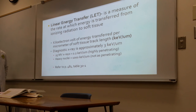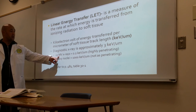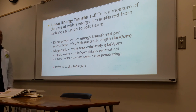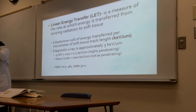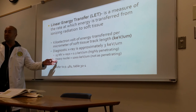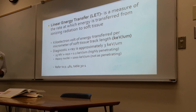The first physical factor for determining absorbed dose is linear energy transfer, or LET. LET is a measure of the rate at which energy is transferred from ionizing radiation to soft tissue, described in keV per micrometer of soft tissue tract length. Diagnostic x-rays have an LET of approximately 3 keV per micrometer. High-energy 25-megavolt x-rays are 0.2 keV per micrometer — highly penetrating. Heavy nuclei such as alpha particles have an LET of 100 keV per micrometer — not highly penetrating; they can barely penetrate a piece of paper.